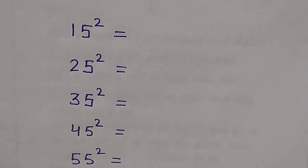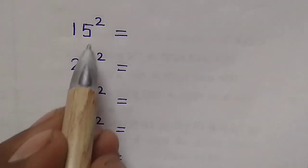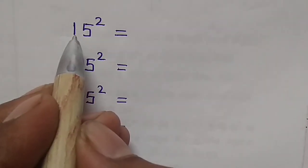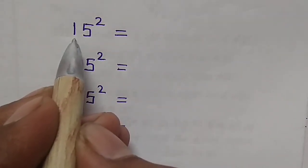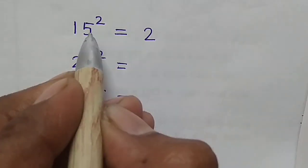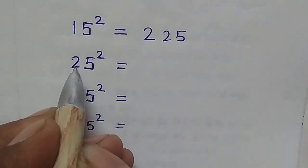Hello friends. In this video we use Vedic mathematics to find the square of numbers whose unit digit is 5. Let's see: 1, 1 times 2 is 2 — so 15 squared is 225. 2, 2 times 3 is 6 — so 25 squared is 625.